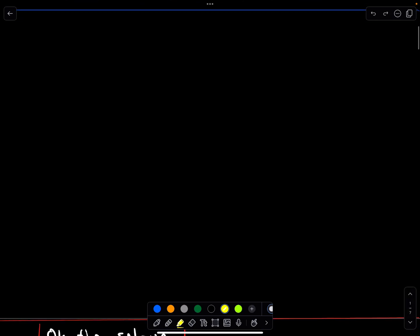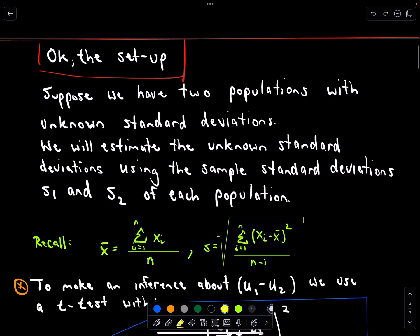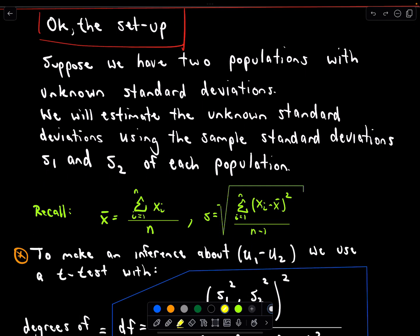A few observations, a little bit of the background and then we'll just do a quick example. So suppose we have two populations and those populations have unknown standard deviations. Maybe for example I'm comparing the salary of a teacher in the state of Texas to the salary of a teacher in California. So maybe I want to compare those two averages but I don't know the standard deviations associated with those.